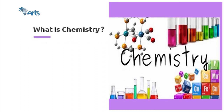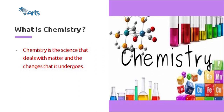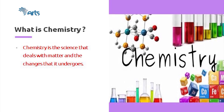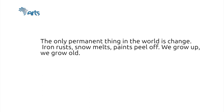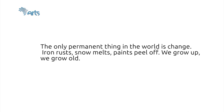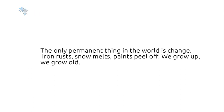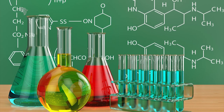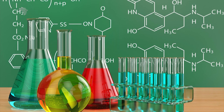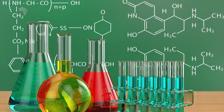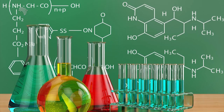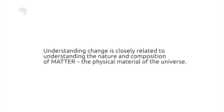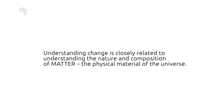Fundamental concepts in chemistry. Chemistry is the science that deals with matter and the changes that it undergoes. It is a study of the composition, structure and properties of matter and of the changes that occur in matter. The only permanent thing in the world is change. For instance, iron rusts, snow melts, paints peel off, we grow up and we grow old. Understanding change is closely related to understanding the nature and the composition of matter, the physical material of the universe.